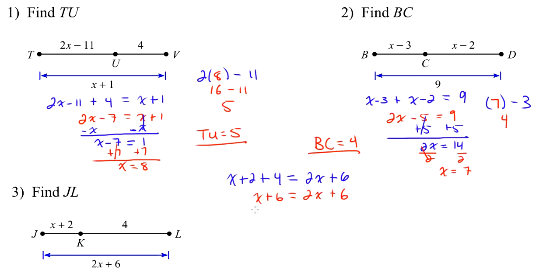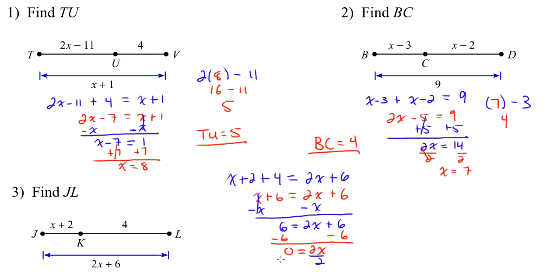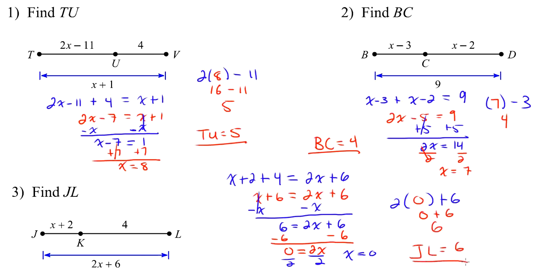We subtract x from both sides, giving us 6 equals 2x plus 6. Then we subtract 6 from both sides and get 2x equals 0. Dividing by 2 gives x equals 0. Plugging into JL which is 2x plus 6: 2 times 0 is 0, and 0 plus 6 is 6. So JL equals 6, and that's our answer.